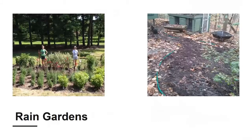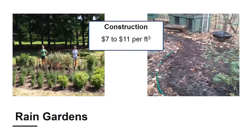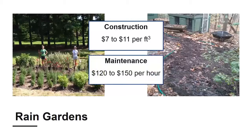Properly designed rain gardens are shallow landscape depressions that allow runoff to infiltrate. Construction costs may range from $7 to $11 per cubic foot. The 10-foot circular garden shown at the right would cost about $1,375 to install to performance standards at a two and a half foot depth. Maintenance involves keeping trash out, mulching, and weeding. Maintenance costs could range from $120 to $150 per hour.